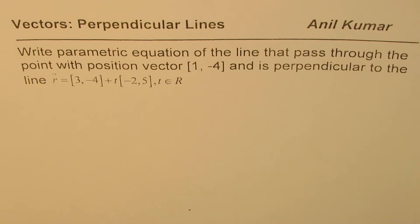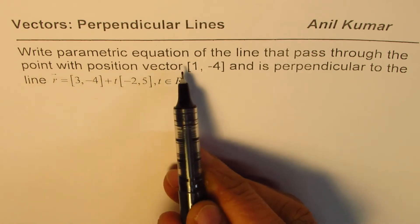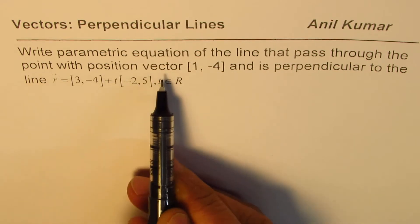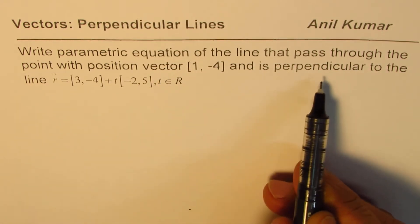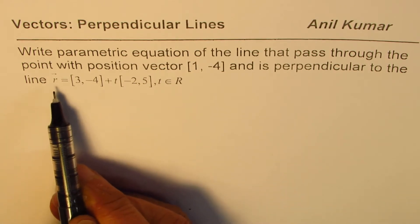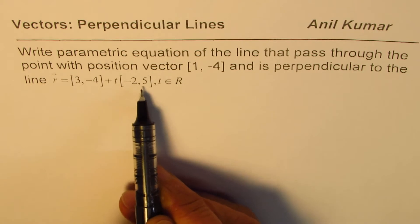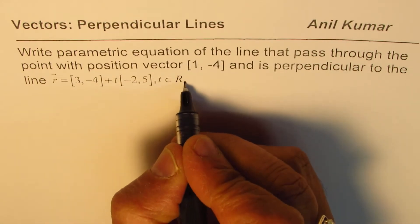I'm Anil Kumar and in this video we will learn a very good technique to write equation of perpendicular line. Question is, write parametric equation of the line that passes through the point with position vector [1, -4] and is perpendicular to the line r = [3, -4] + t[-2, 5], where t belongs to real numbers. So t is your parameter.